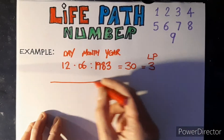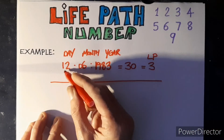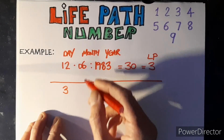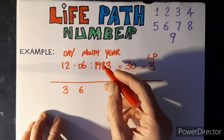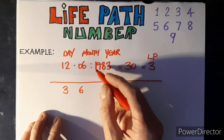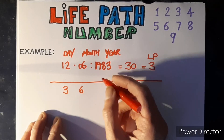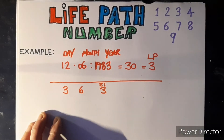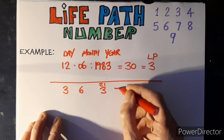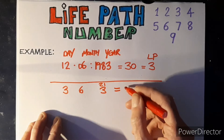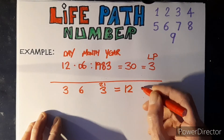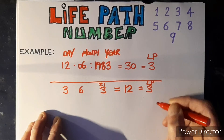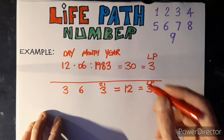Now if we do it in the trinity method with the same date: the 12th becomes a three, the month is a six, then we do the year — nine, ten, eighteen, twenty-one — which is a three. Adding those together gives twelve, but we still get to life path three.